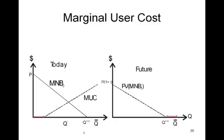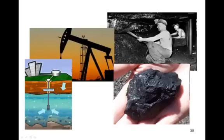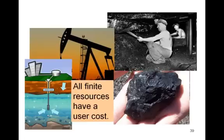If there's an abundance of the resource — enough so that we can consume a little bit today without diminishing what's available for the future at all — then that first increment comes at zero marginal user cost. For any finite resource, there's always a marginal user cost that should be taken into account. This is true whether we're talking about coal, oil, or even groundwater. Any groundwater consumed today that diminishes future generations' ability to use that water will have a user cost. That's all on static and dynamic efficiency.